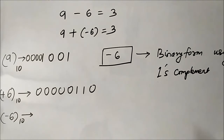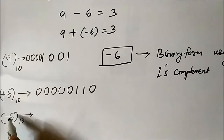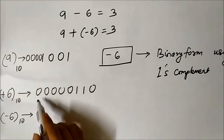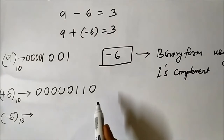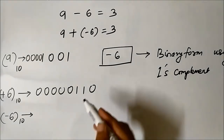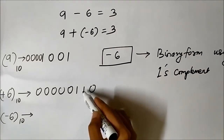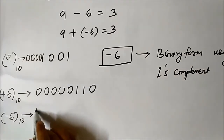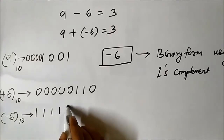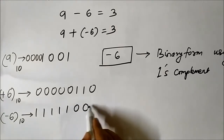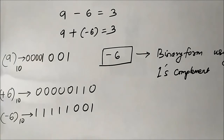Minus 6 can be represented as the 1s complement of plus 6. I have already posted a video about the 1s and 2s complement concept and how to represent negative binary numbers — please check that out. The 1s complement is simply inverting the bits: every 0 is replaced with 1 and every 1 is replaced with 0. So minus 6 in 1s complement is 1 1 1 1 1 0 0 1.